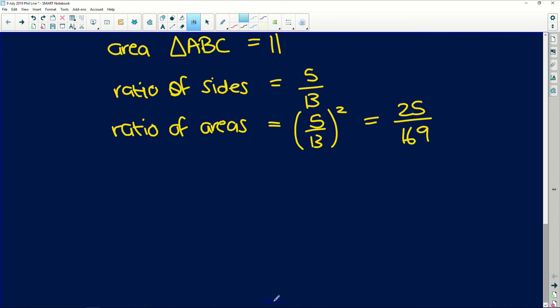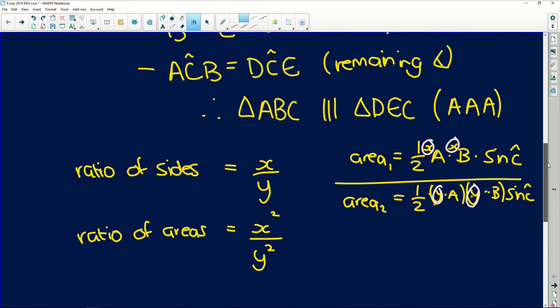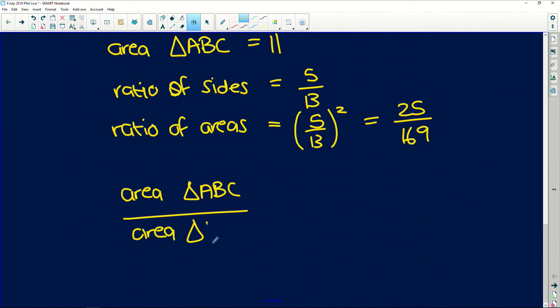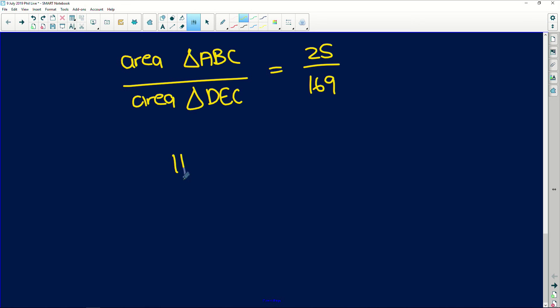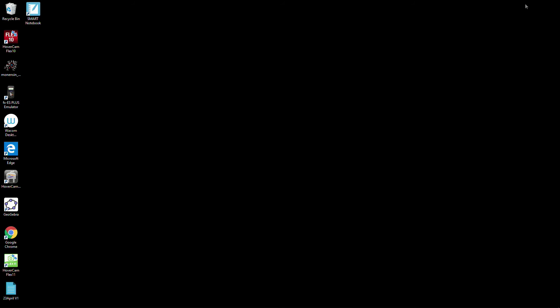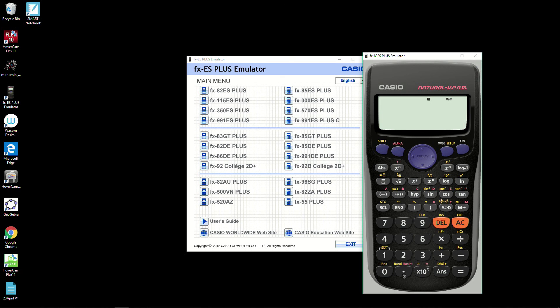So now we know that area of triangle ABC is equal to 25 over 169. That is the ratio of their areas. And we already know that this area is 11. So if we're looking for triangle DEC, we can simply cross multiply. Okay, so let me get my calculator out. I already know that it's not open.